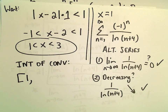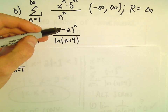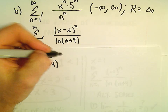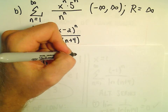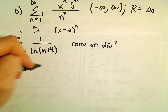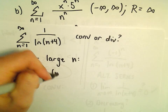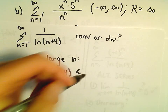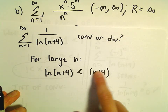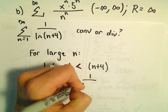So now we have to check what happens if we plug in x equals 3. If we plug in x equals 3, we'll have 1 over the natural logarithm of n plus 4. Now I'm thinking, does this series converge or diverge? For large n, it's certainly true that the natural logarithm of n plus 4 would be strictly less than n plus 4. The natural logarithm grows much slower than does just the linear n plus 4. That tells us that 1 over the natural logarithm of n plus 4 would be bigger than 1 over n plus 4.